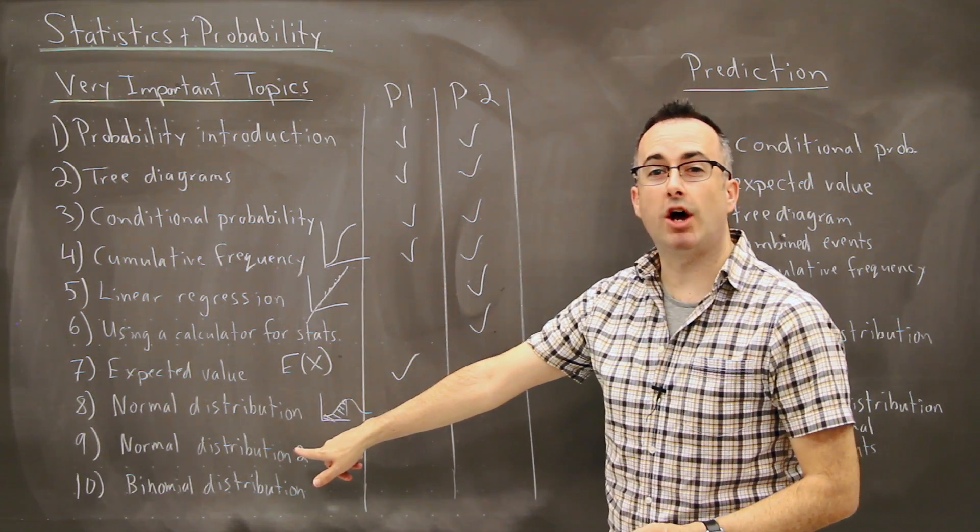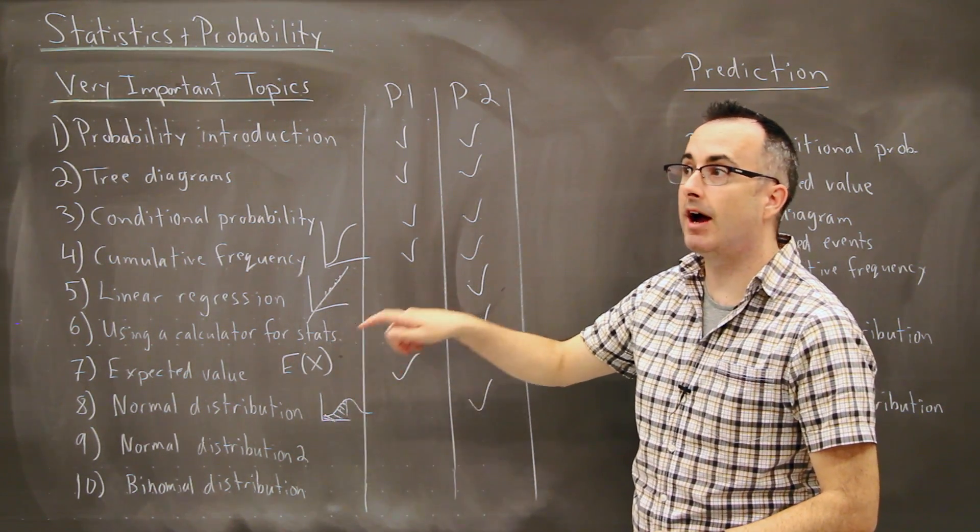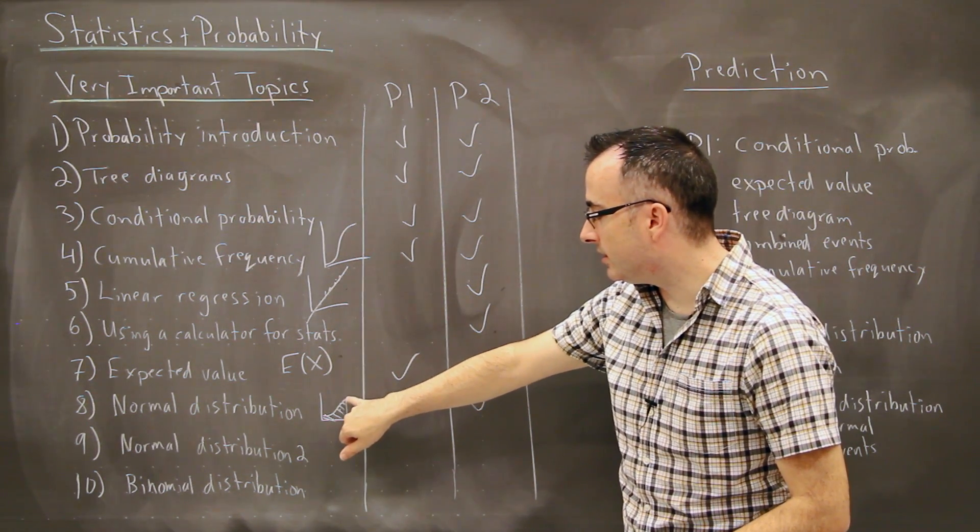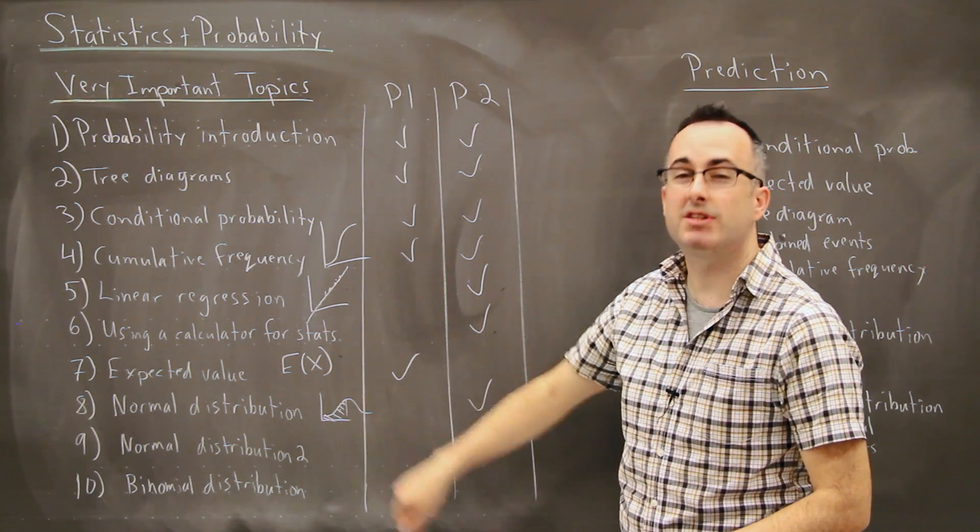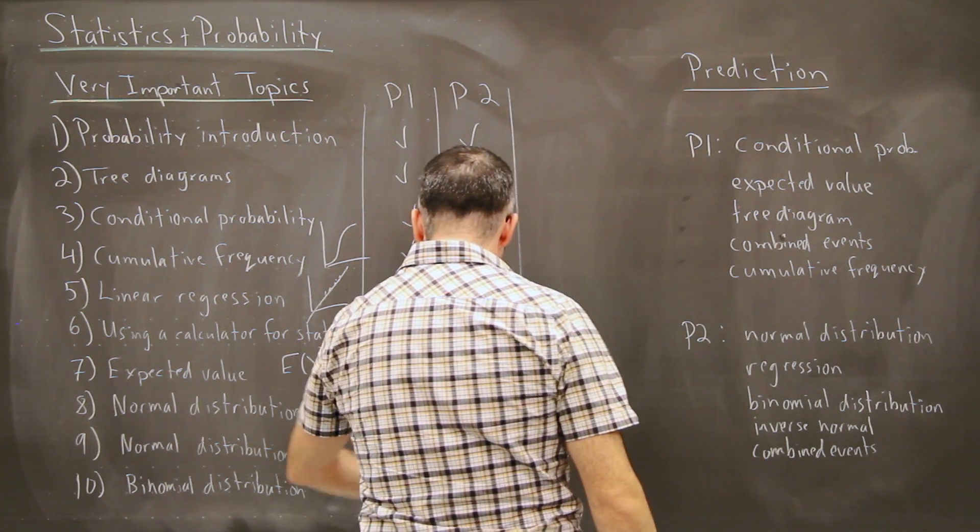Normal distribution two is when you work the opposite case. Here you're given a probability. And you're hoping to find either the value or the mean or the standard deviation. We use something called inverse norm. That's really important. Inverse normal. That also shows up on paper too.